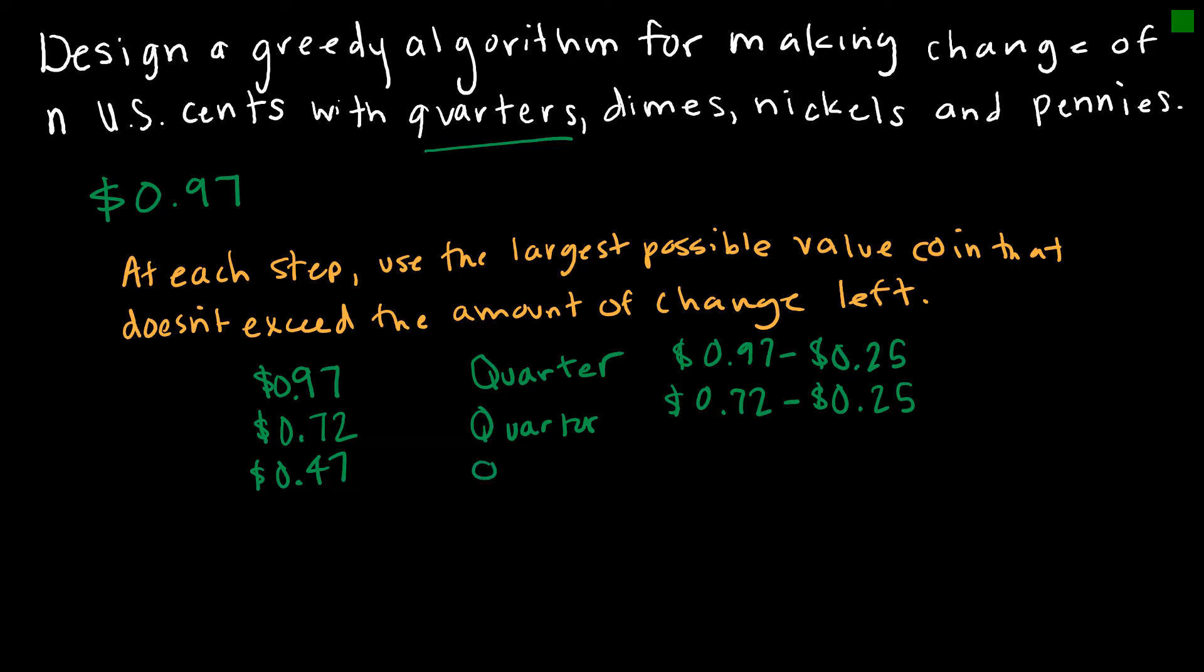And can I still give a quarter? I can. So I would have 47 cents minus 25 cents, and that would leave me with 22 cents left over. Can I still give a quarter? No, because a quarter is more than what I owe you. So now I'm going to go to the next possible, which is dimes. So I'm going to give you a dime, and that means 22 cents minus 10 cents, which leaves me with 12 cents.